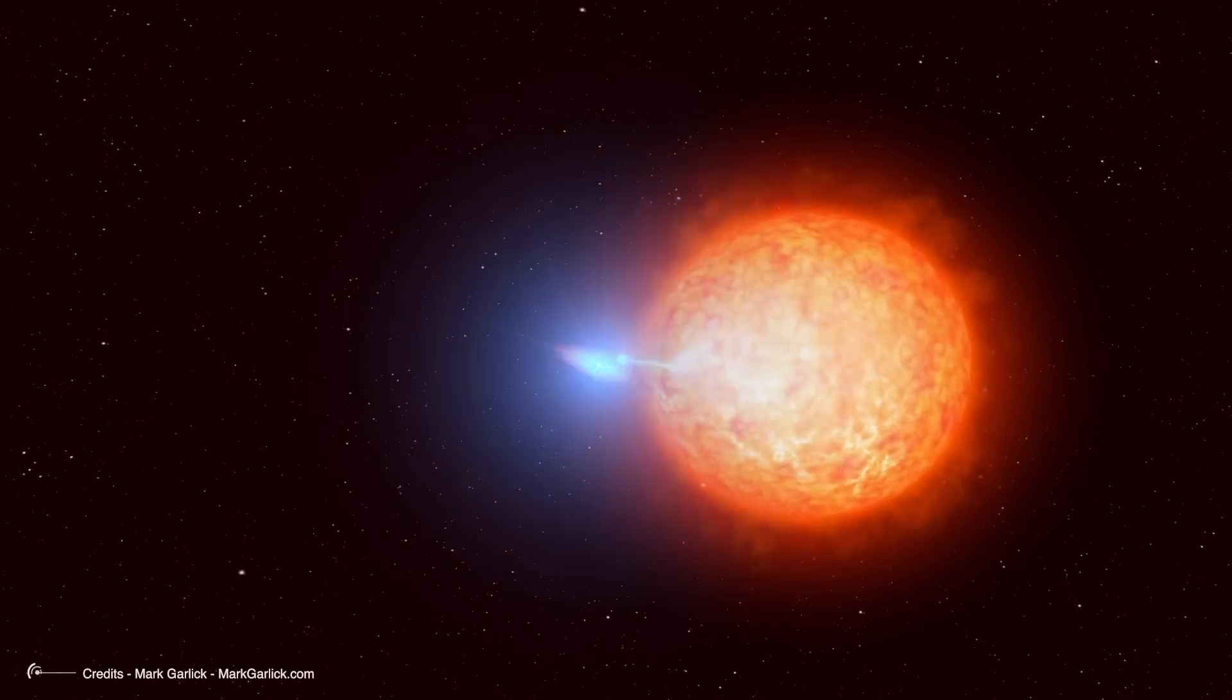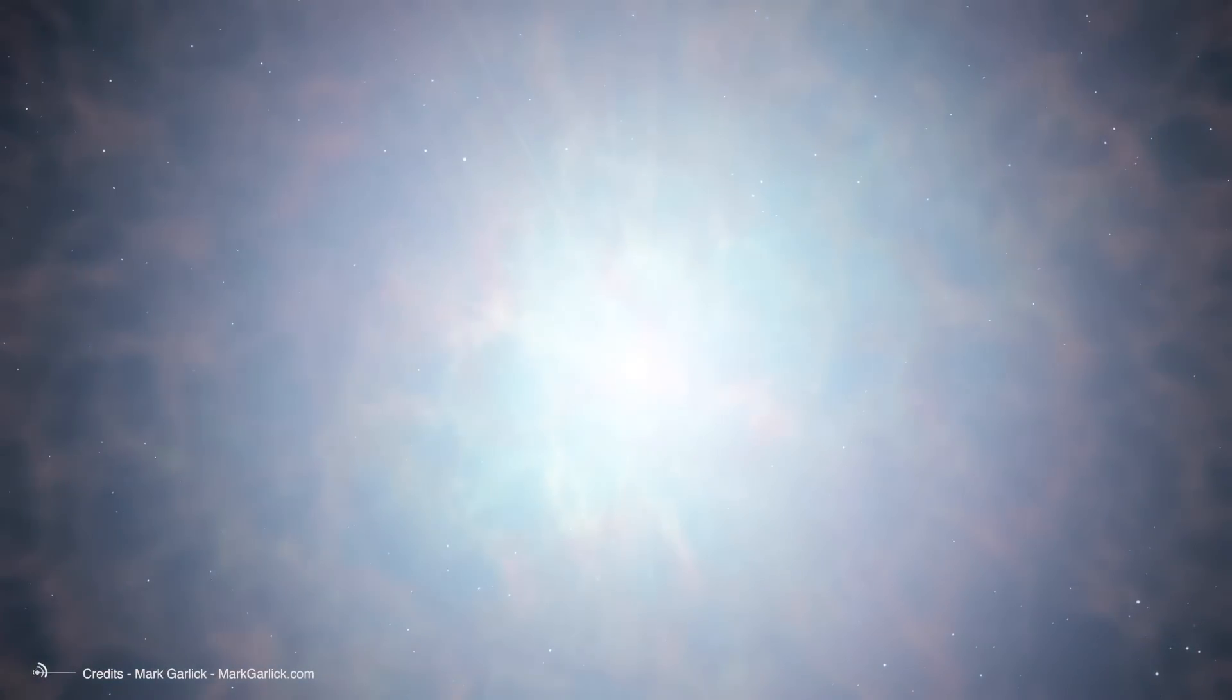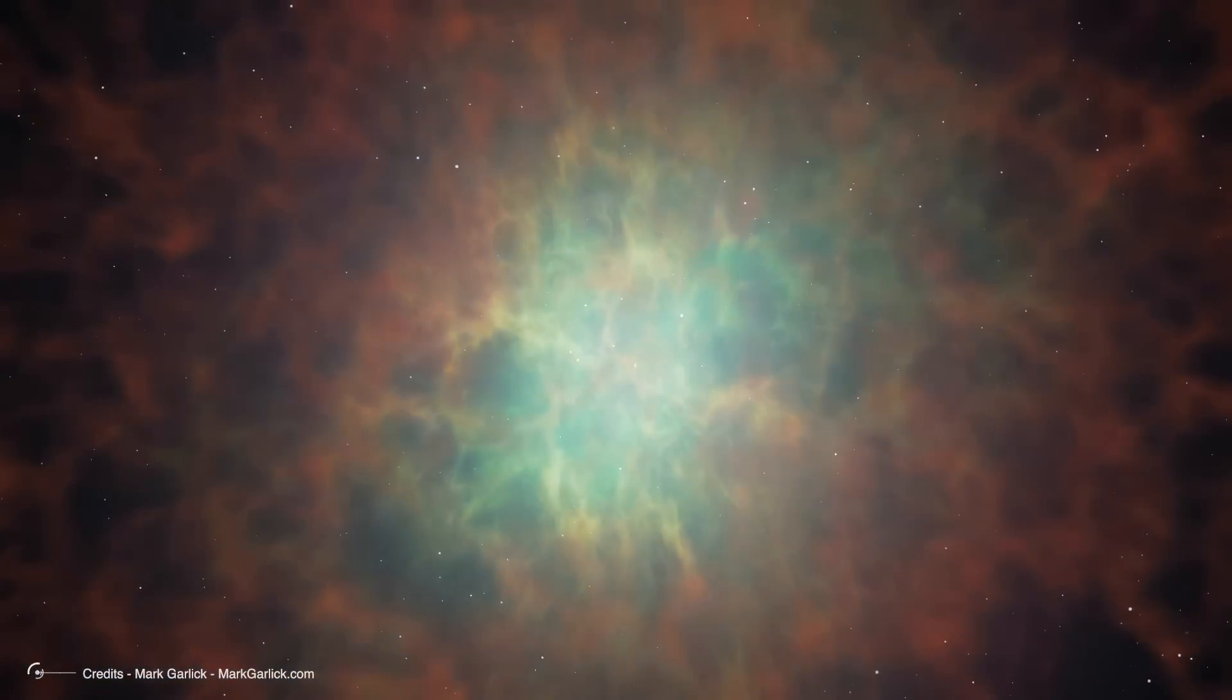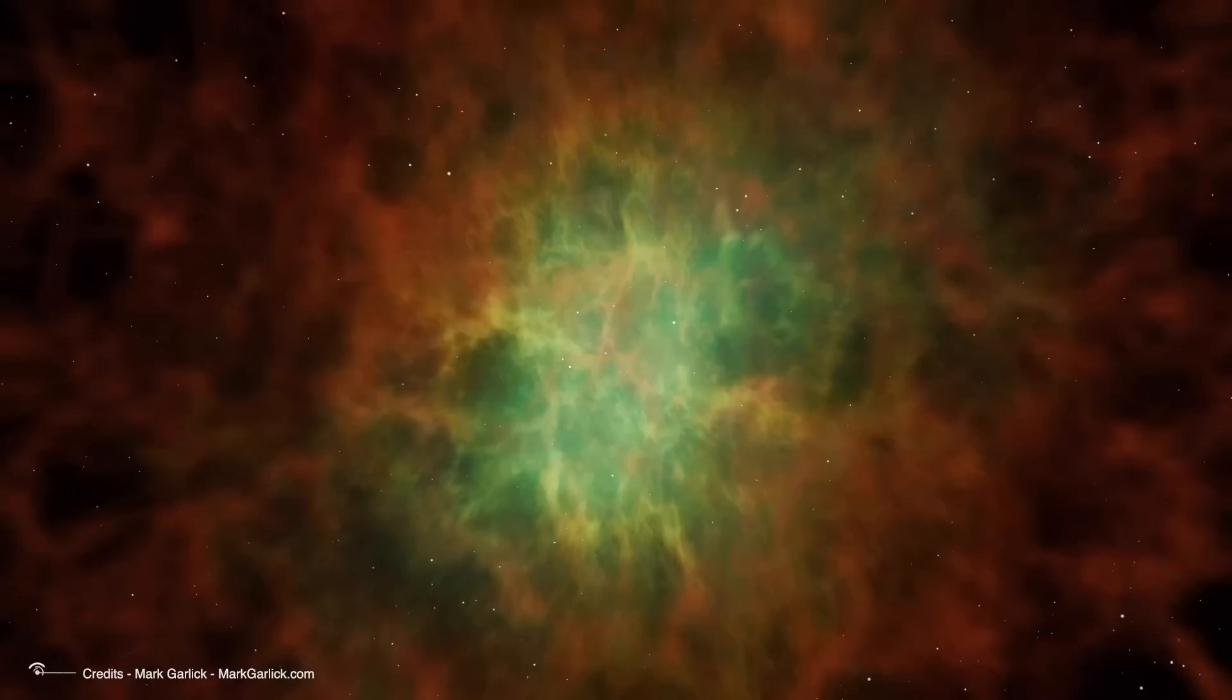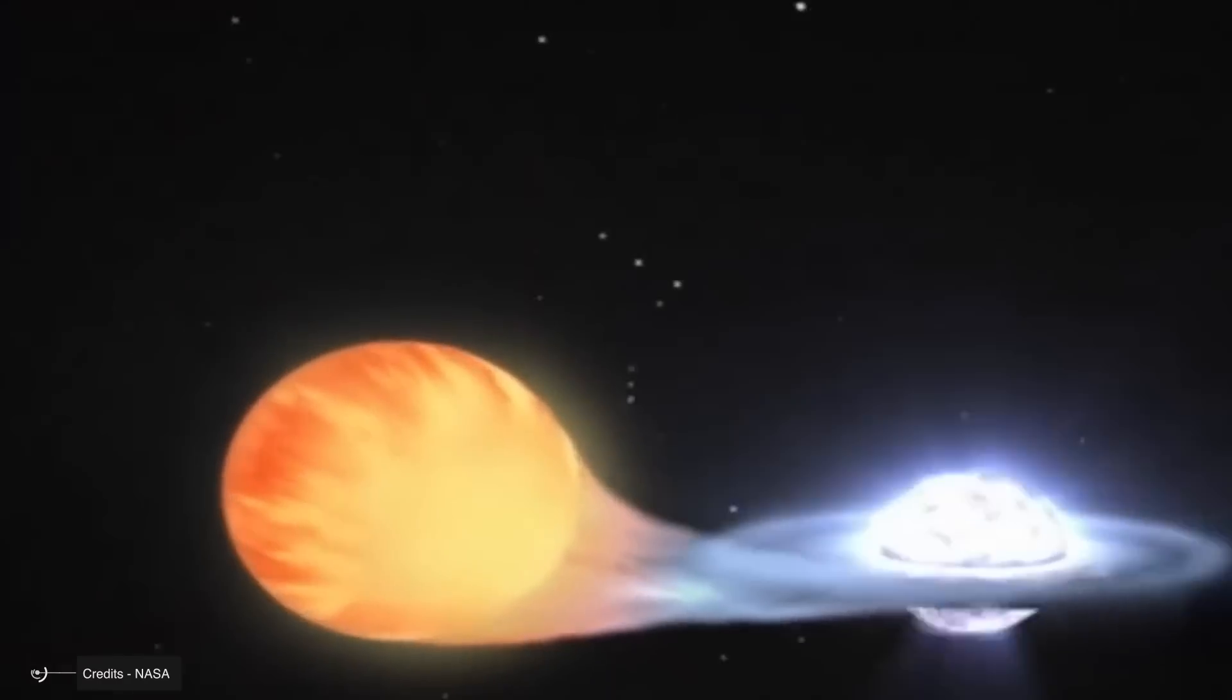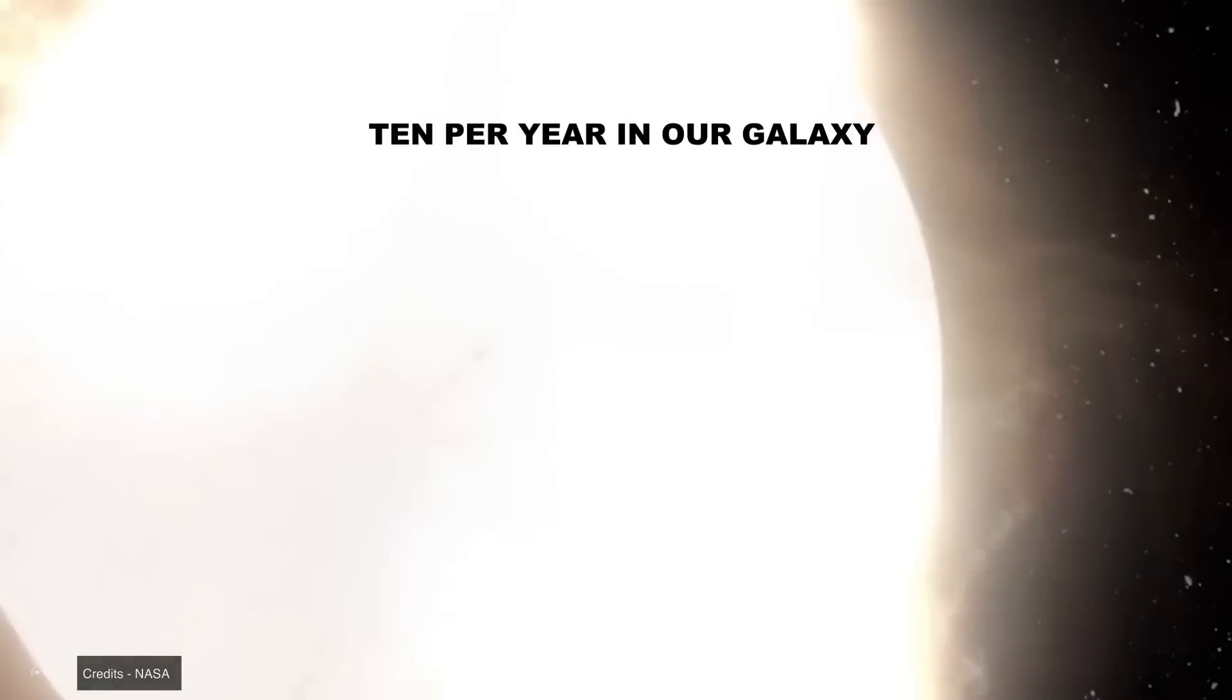Nova stars appear more often along the path of the Milky Way, especially near the galactic center where the stellar density is higher. However, they can manifest anywhere in the sky. They occur much more frequently than supernovae, with an average of about 10 per year in our galaxy. Most, even though the increase in magnitude is significant, remain observable only with a telescope, and on average, only one every 12 to 18 months reaches naked-eye visibility.